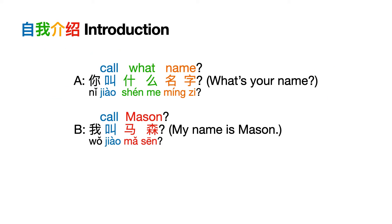So, after you have said hello to the other person and you wonder what his or her name is, you can ask 你叫什么名字? — What's your name? 你, which we learned in the previous lesson, means 'you'. 叫 means 'called', 什么 means 'what', and 名字 means 'name'. 你叫什么名字? — What's your name?